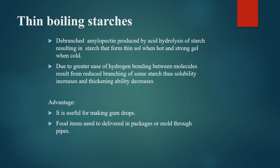Thin boiling starches are T-branched amylopectin produced by high acid hydrolysis of starch. They form thin sols when hot but have the ability to form a strong gel when cold. Due to greater ease of hydrogen bonding between molecules resulting from reduced branching, their solubility increases but the thickening ability decreases. They are used for making gumdrops and food items that need to be delivered through packaging or molds via pipes.